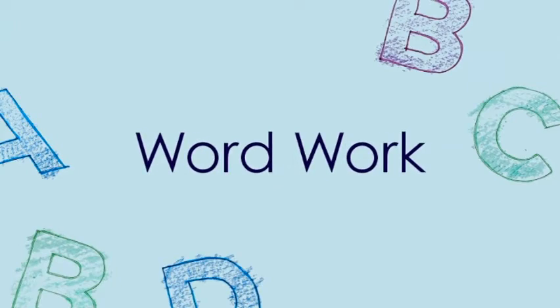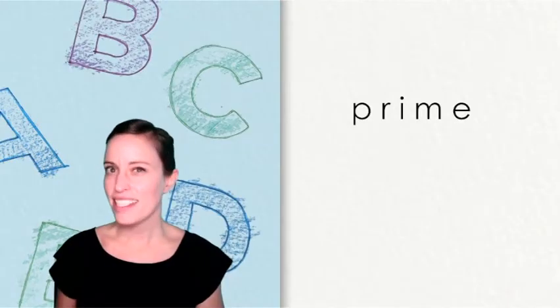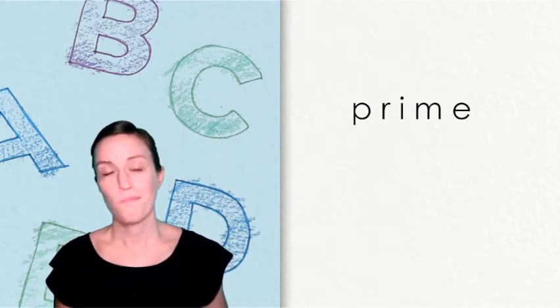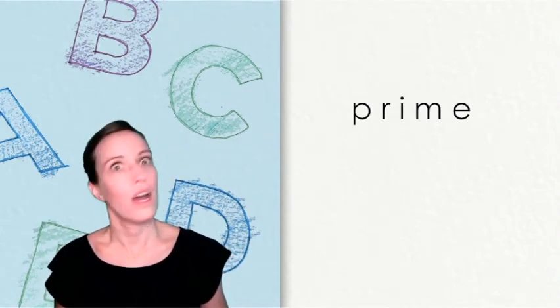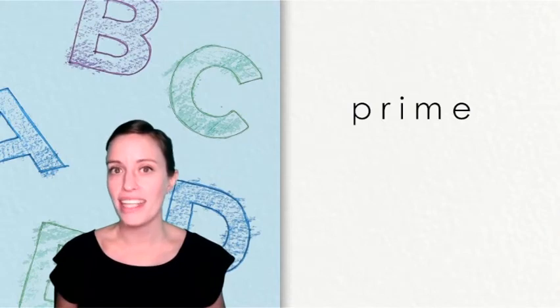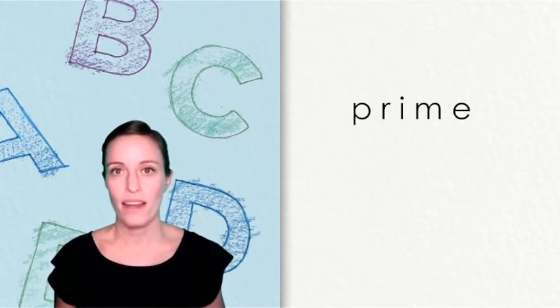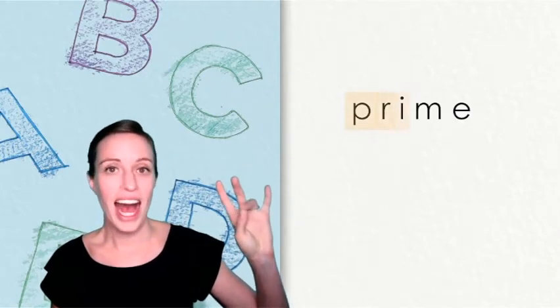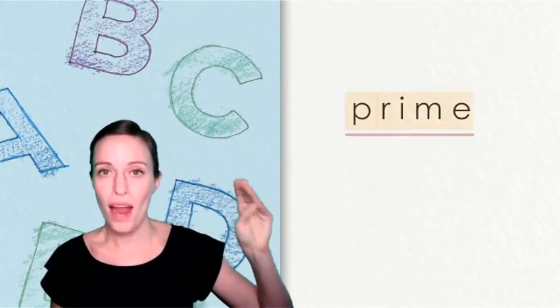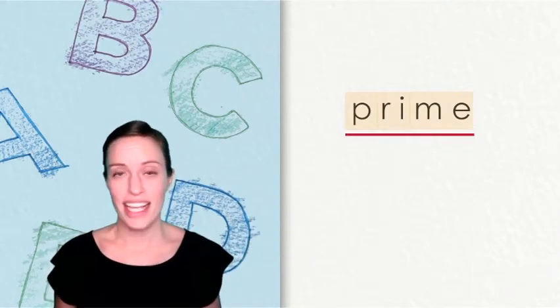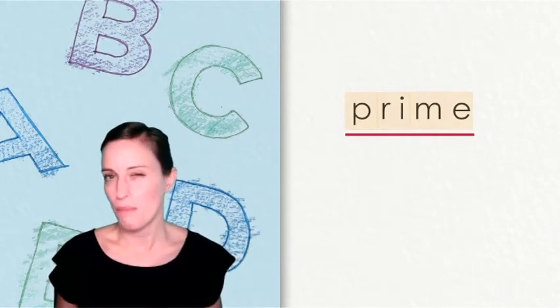Word work. It's time to read some words now. Let's take a look at this first word. Wait. I noticed that silent E at the end. So I know the vowel I is going to say its name. That's it. I didn't say a sound for the letter E because it's silent.